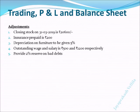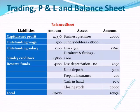Next, from the adjustments we know that there is an outstanding wage of 500 and an outstanding salary of 1,200. These are also our liabilities — amounts we had to pay this year but couldn't, so they are outstanding liabilities.